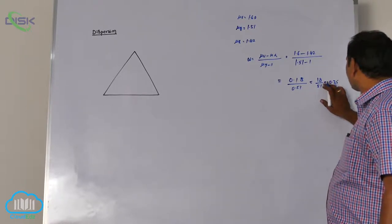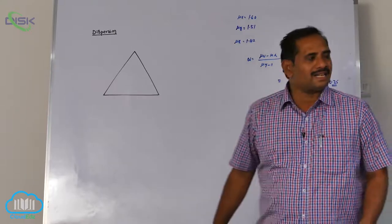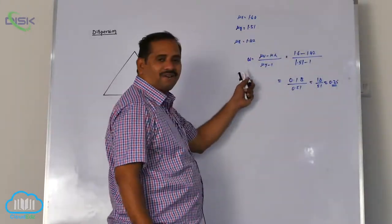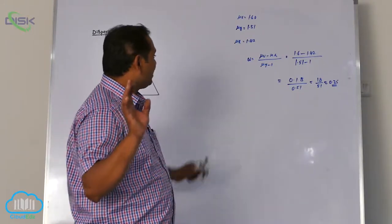You can calculate roughly 0.35 is the dispersive power. In this way dispersive power you are going to get is always positive, never you will get it as a negative term.